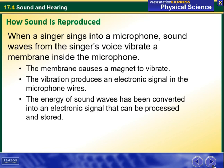For example, when a singer sings into a microphone, sound waves from the singer's voice vibrate a membrane inside the microphone. The membrane causes a magnet to vibrate, and this vibration produces an electronic signal in the microphone wires. The energy of sound waves has been converted into an electronic signal that can be processed and stored.